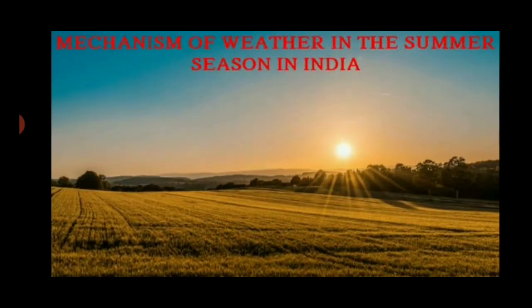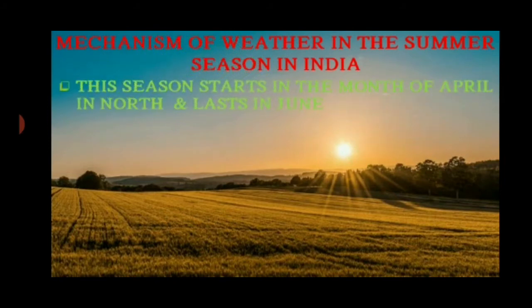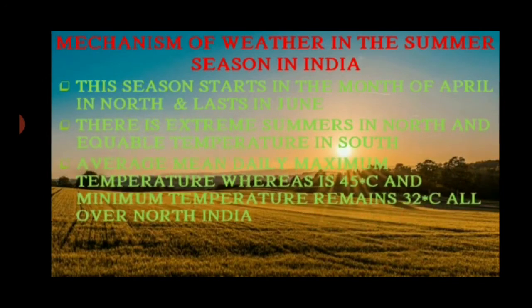Now let's talk about the mechanism of weather in the summer season in India. This season starts in April in the north and lasts until June. There are extreme summers in the north and equable temperatures in the south. The average mean daily maximum temperature is 45 degrees centigrade and the minimum temperature remains 32 degrees centigrade all over north India.